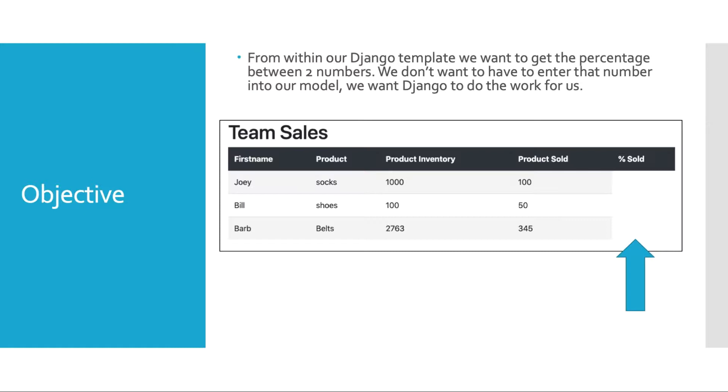So if you look at this table here, this is what it will look like. We have a listing of how well our salespeople are doing. We have three salespeople here. We have a first name, a product, the product inventory count, then we have the number of products that have been sold against that inventory. And what we want is this percentage of the products that have been sold using those two integer fields. 100 for Joey for the first one, product sold against his inventory of 1000. So let's see how we can do this very easily.